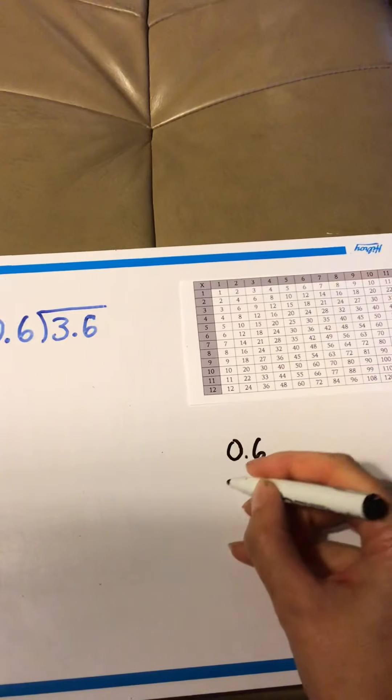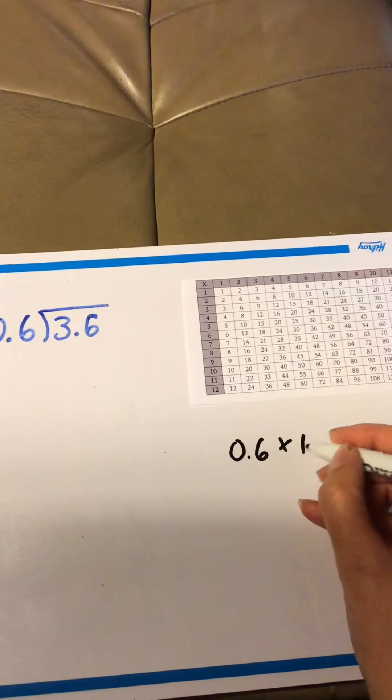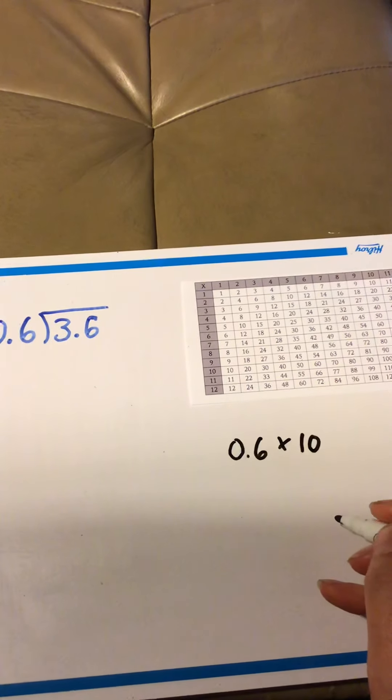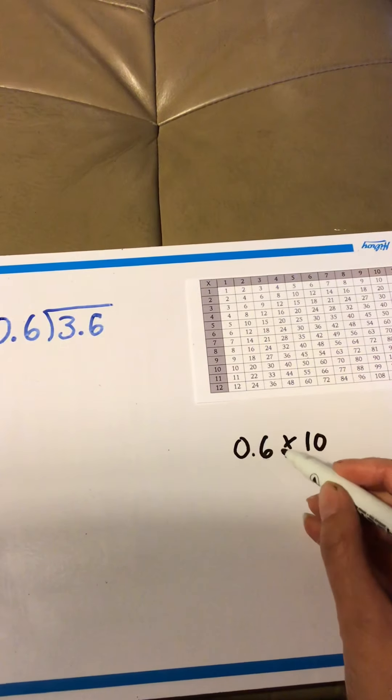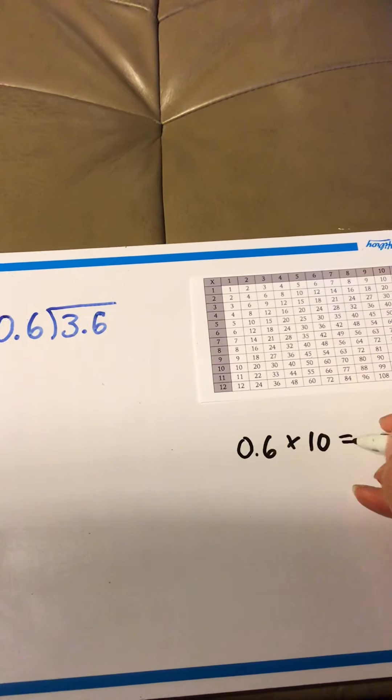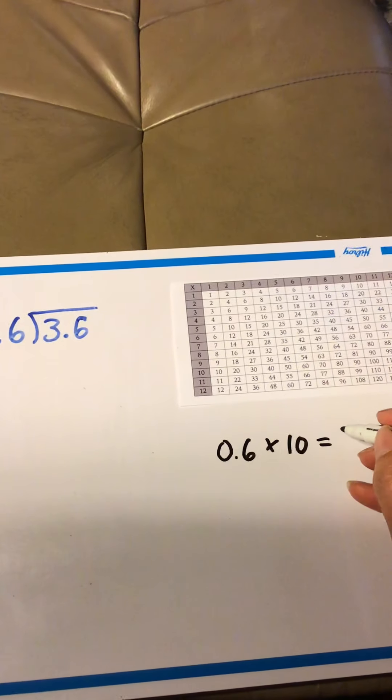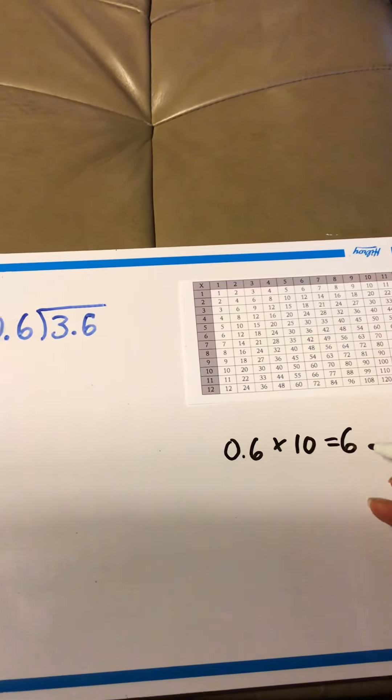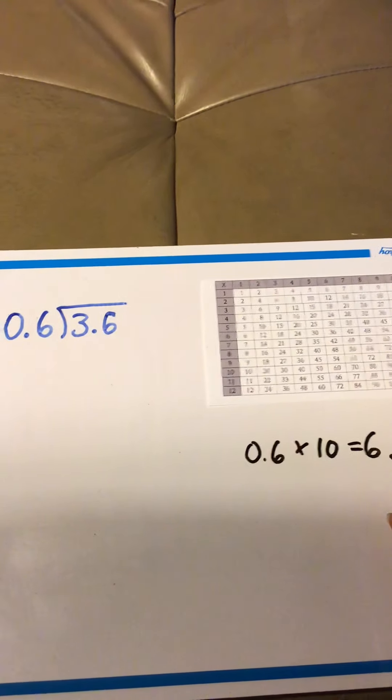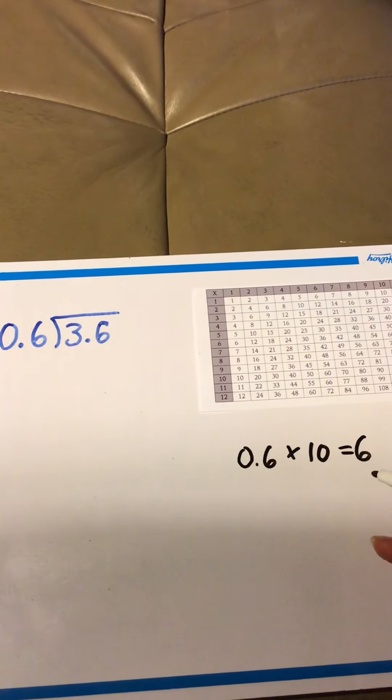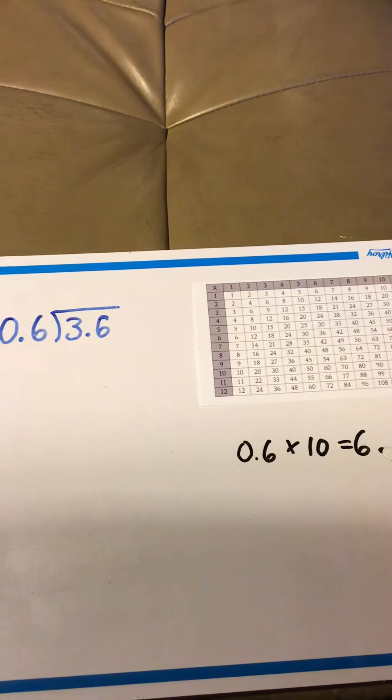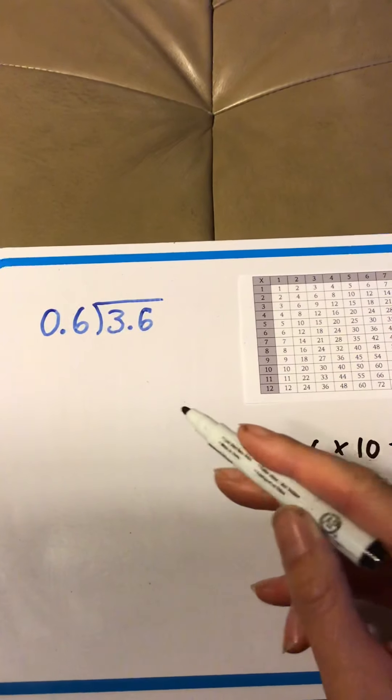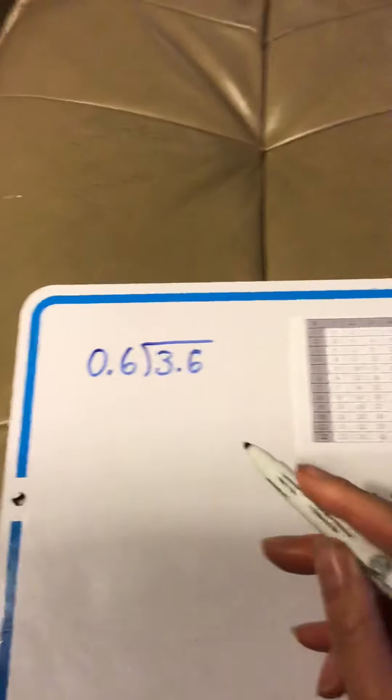0.6 times 10. Right? So, anything times 10, the sneaky way of doing it is we're going to skip the decimal point over one spot. So, 0.6 times 10, we're going to end up with lucky number 6. Okay? Wait a second. We'd know what to do if we had 6 at the door. So, what if we changed this 0.6 into a 6? And you know what? That's exactly what we're going to do.